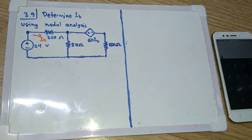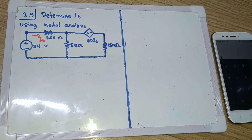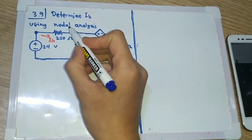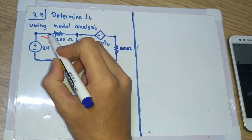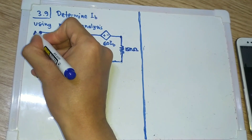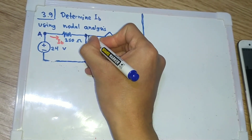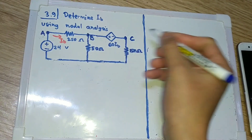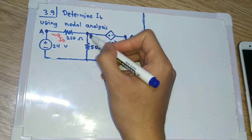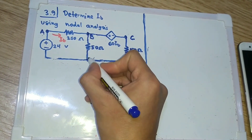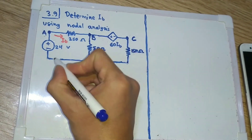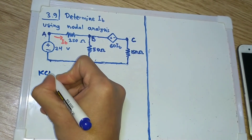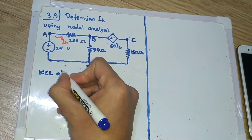This is problem 3.9 of Sadiku. We need to determine IB using nodal analysis. We will use KCL. I will name this node as node A, this node as node B, and this node as node C. The central node of this problem is node B, so we will start from that, and I will set this node here as ground.